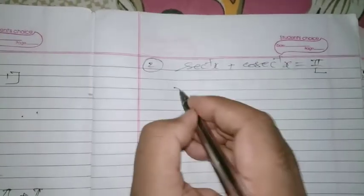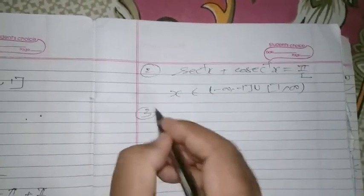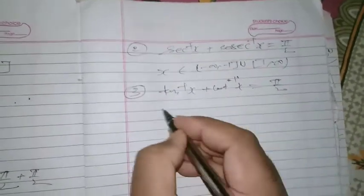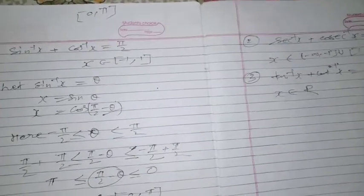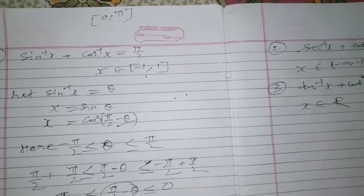On the same pattern, we can prove: tan⁻¹(x) + cot⁻¹(x) = π/2, where x belongs to all real numbers. We observe the pattern: whenever two inverse trig functions share the same domain — like sin⁻¹ and cos⁻¹, or sec⁻¹ and cosec⁻¹, or tan⁻¹ and cot⁻¹ — their sum equals π/2. We will discuss more new properties of ITF in the next video.